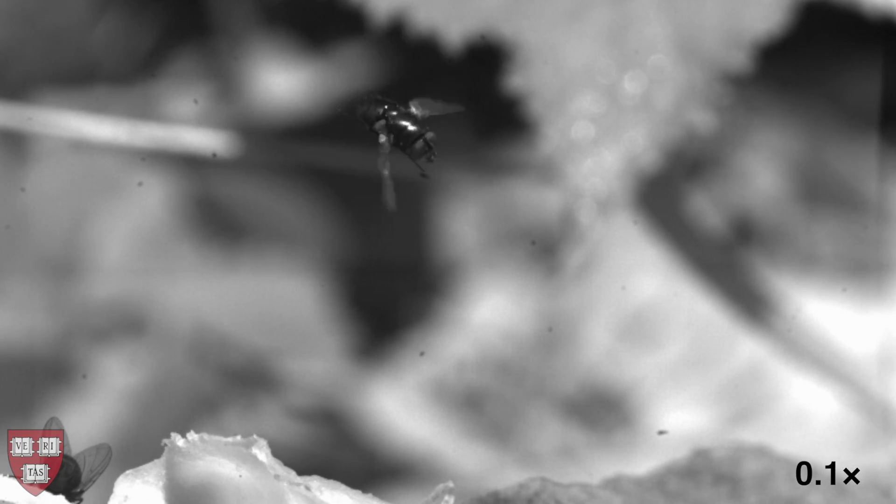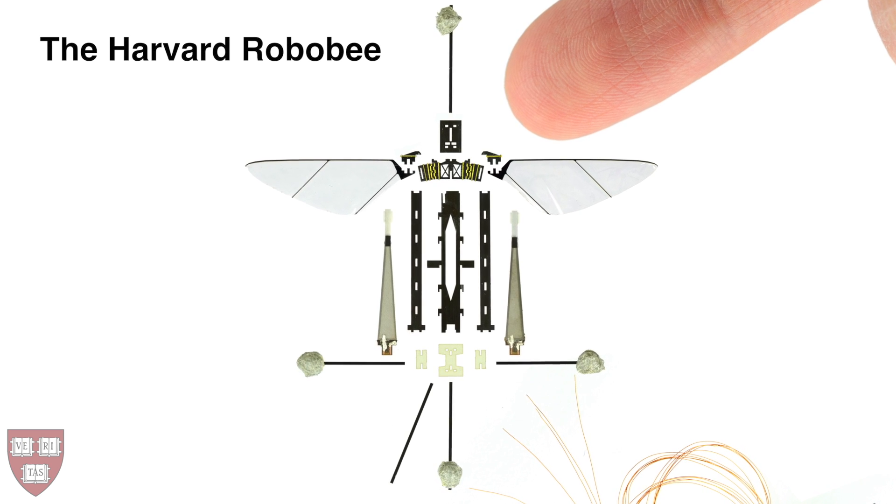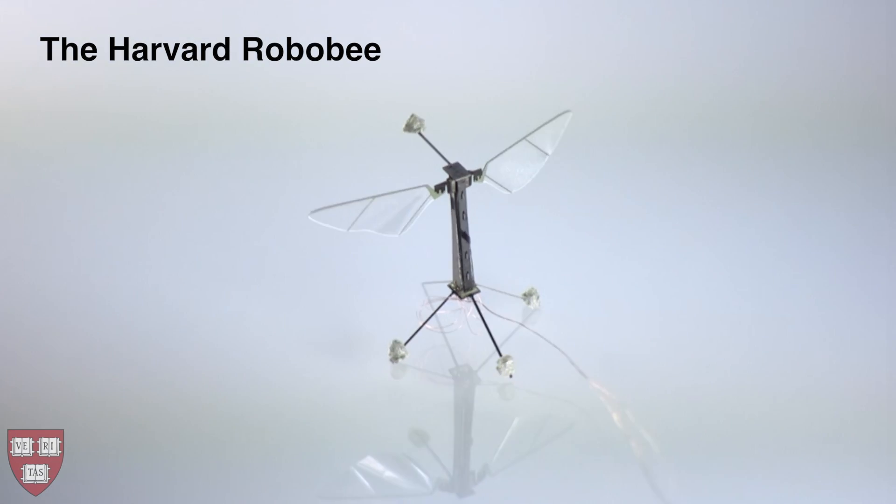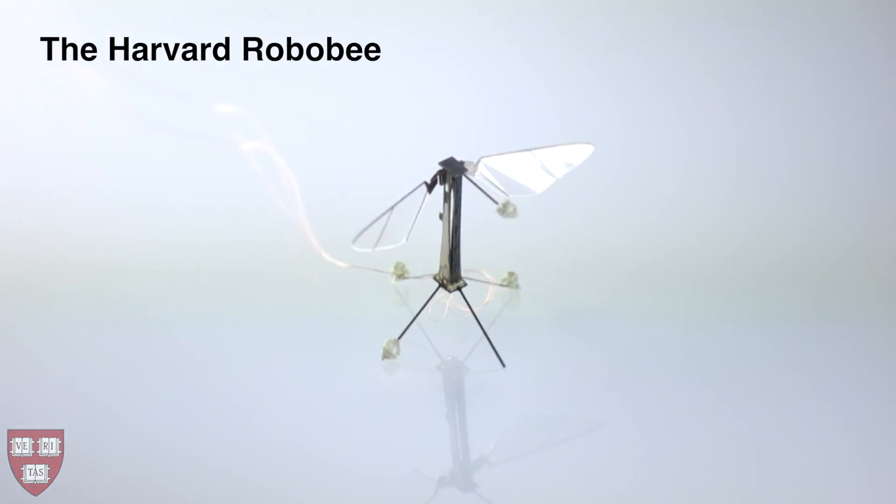Insects such as flies and bees have evolved to become superlative fliers, able to perform aerial maneuvers that far surpass anything man-made. Inspired by these animals, the Harvard Microrobotics Laboratory has created a flying robotic insect the size of a fly or bee.